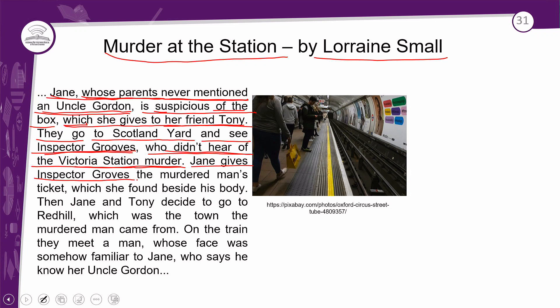'Jane gives Inspector Groves the muttered man's ticket, which she found beside his body.' So Jane — who is the niece of this Uncle Gordon, whose existence she didn't know about because her parents never mentioned him — gives Inspector Groves, who hadn't heard of the Victoria Station murder, the murdered man's ticket, which she found beside the uncle's body. 'Then Jane and Tony decide to go to Red Hill, which was the town the muttered man came from' — que era a cidade da qual o homem assassinado tinha vindo.